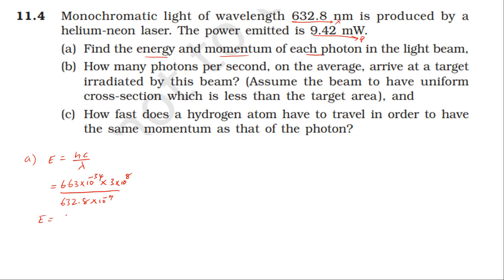Energy is 3.14 times 10 power minus 19 Joule. For momentum, use the formula h by lambda. H is 6.63 times 10 power minus 34 divided by lambda, 632.8 times 10 power minus 9 meter.